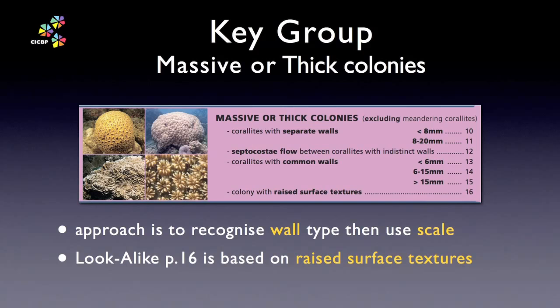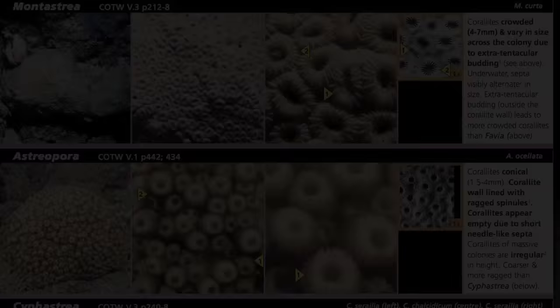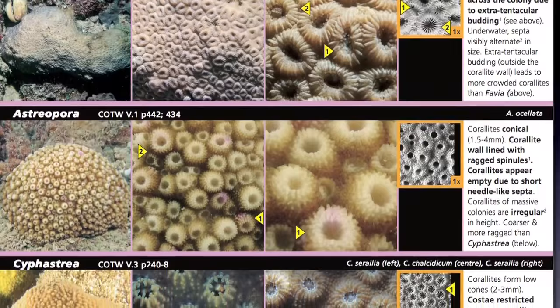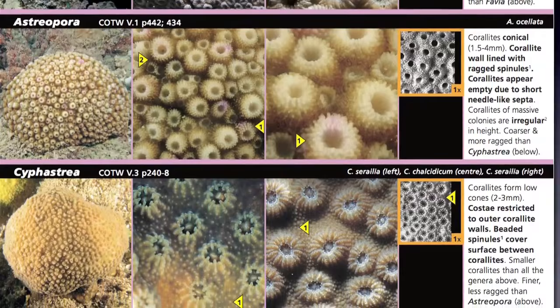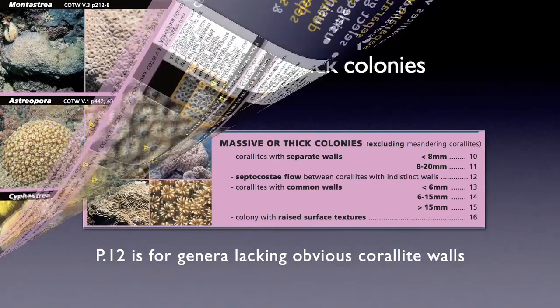So we've decided to use the massive key group. Now browse this key group's pages to see how it works. Note each page is based around simple, well-defined concepts: wall type, scale, and surface textures. On page 10 of the coral finder, we see some examples with coralites having separate walls and being less than 8mm across. By referring to the descriptions, we can further tease the genera apart using details of the scepter, costi, and ornament.